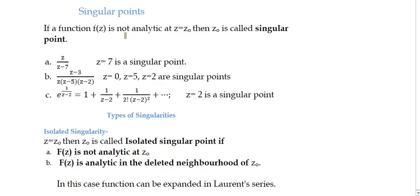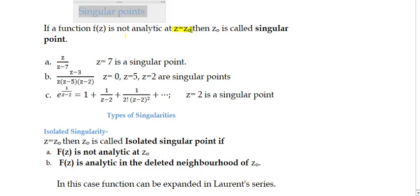Hello students, welcome to this lecture series of complex analysis. In today's lecture we will discuss singular points and types of singularities. If a function f(z) is not analytic at z equal to z0, then z0 is called a singular point — meaning at that particular point the function will not be analytic.